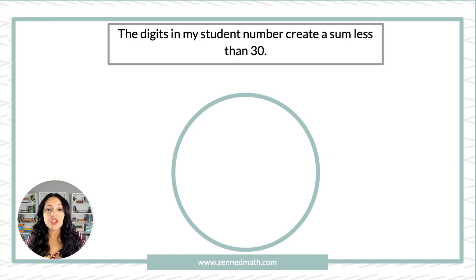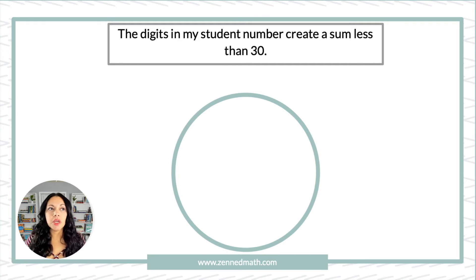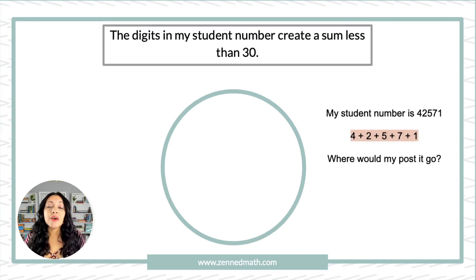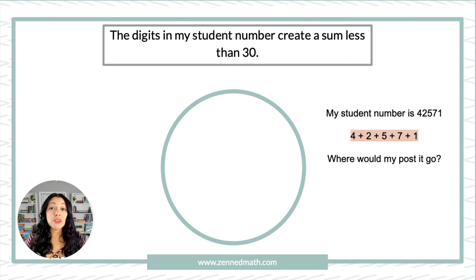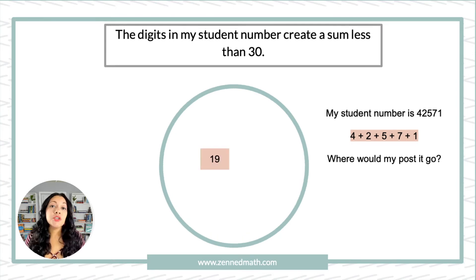Let's look at this one: the digits in your student number create a sum less than 30. This makes it personal — it's about them. Students do not have to write their student ID; they would just write the sum. So if my student number is 42571, students take those digits and add them together. My sum is 19 — I know it's less than 30, so I put it inside the loop.